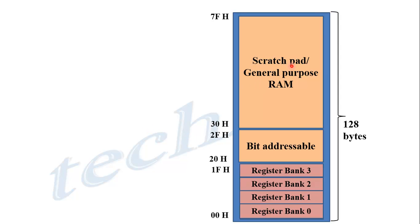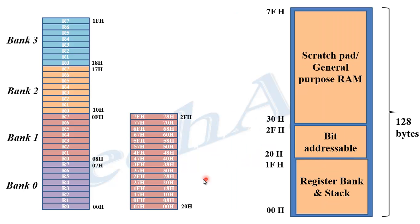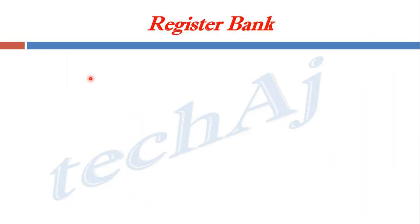The last part is the scratchpad or general purpose RAM, having address starting from 30H to 7FH — a total of 80 bytes of RAM memory. It is used generally for the storage of data. This gives the complete view of 8051 RAM memory, consisting of the register bank, bit addressable area, and scratchpad.